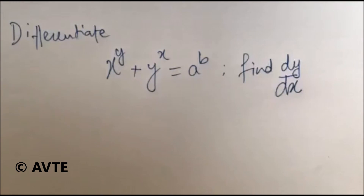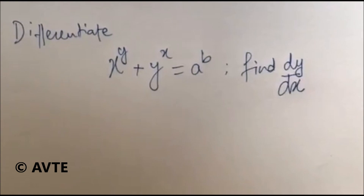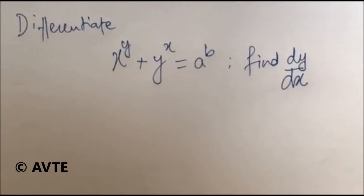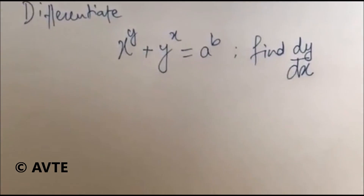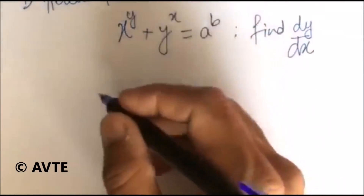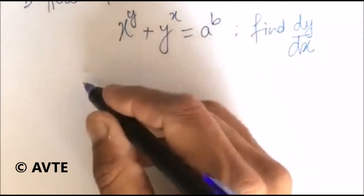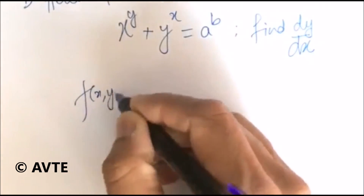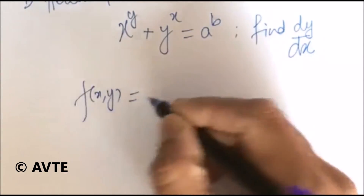But we are giving you the technique with which you can solve this question in less than 15 seconds. Just see the technique: I'm taking this as a function F(x, y), which is equal to x to the power y minus something.